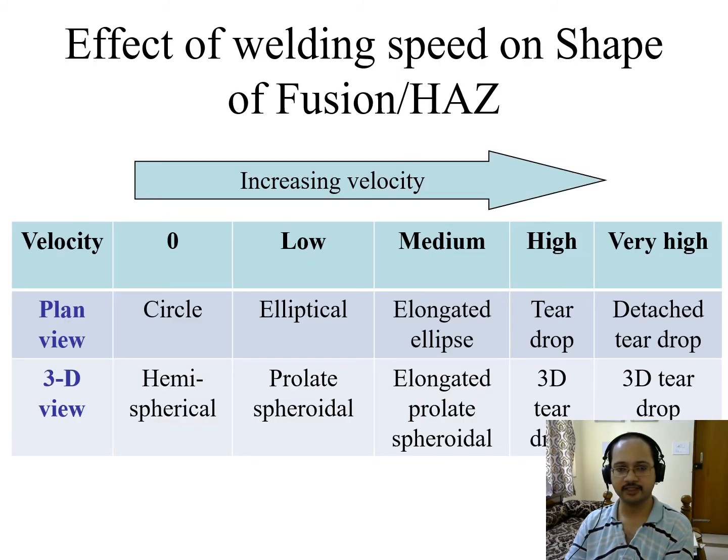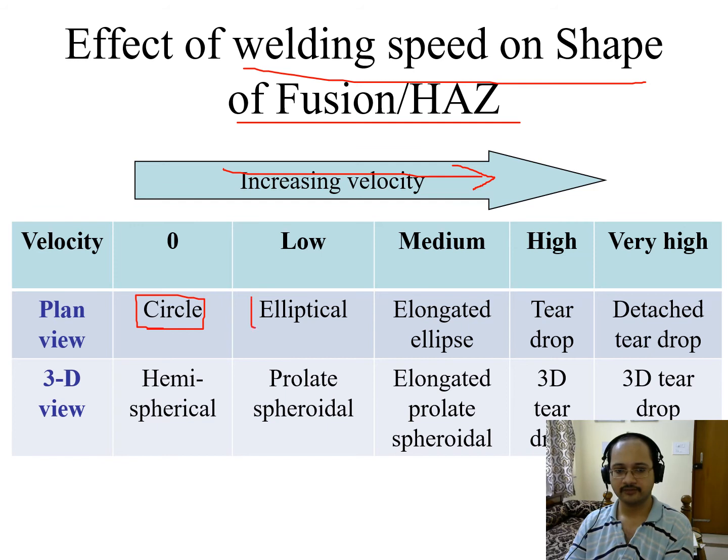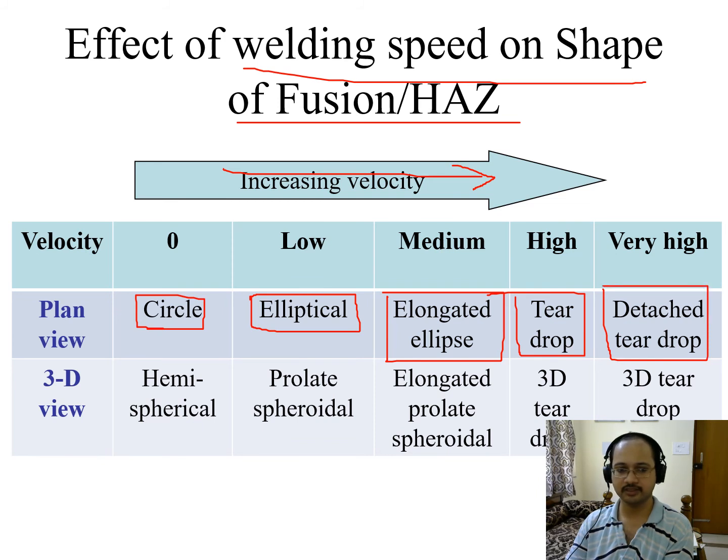Effect of welding speed on shape of fusion and HAZ. From left to right if we increase the velocity, what do we see on the shape of the fusion zone from the top view or the plan view? We see a circle when the velocity is zero, then when the velocity is a bit higher we see an elliptical shape, then an elongated ellipse, a teardrop structure, and a detached teardrop. So this is in 2D top view or plan view.